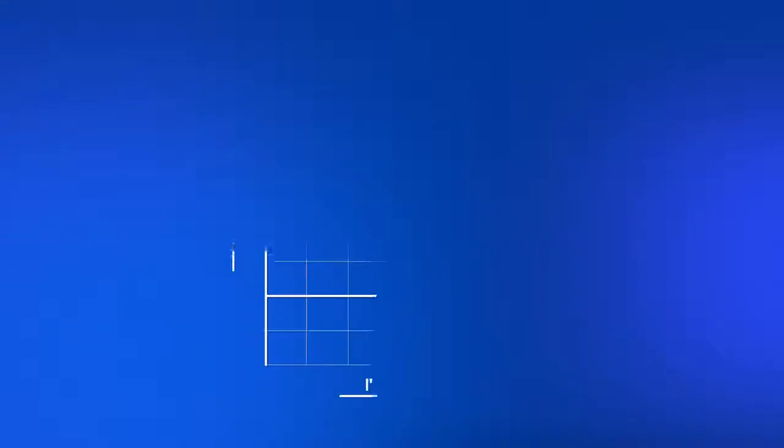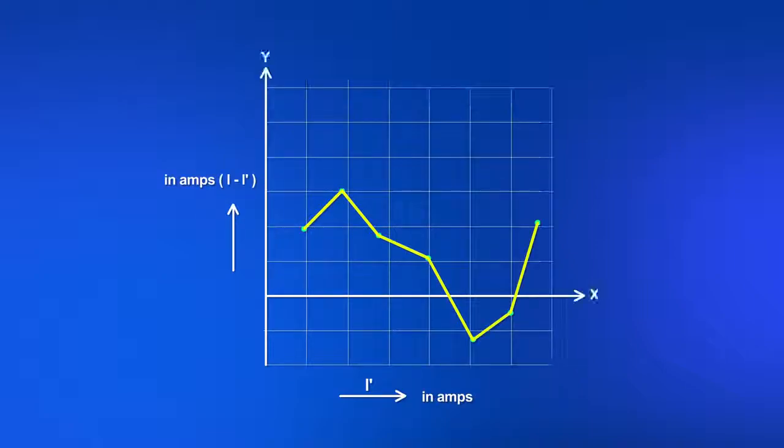A graph can be drawn with (I minus I') along Y axis and I' along X axis. This is called the correction graph.